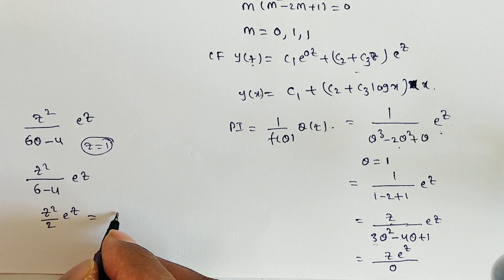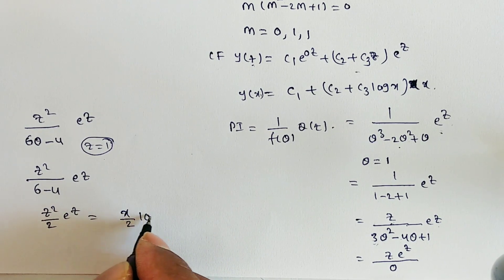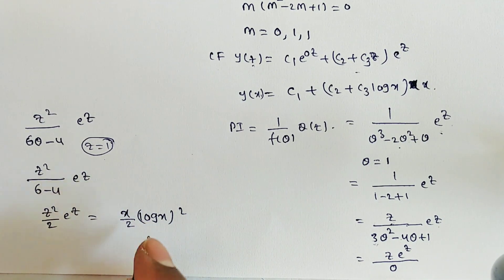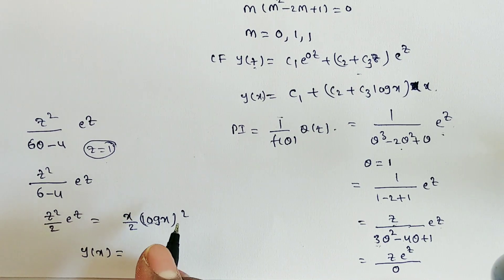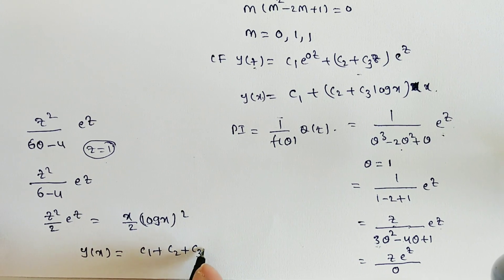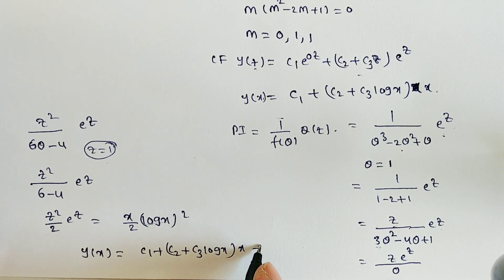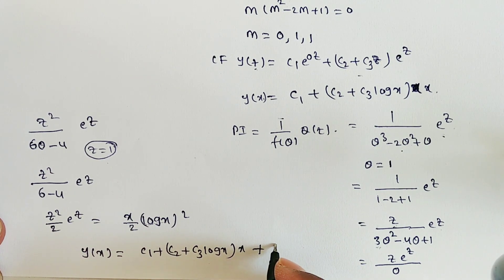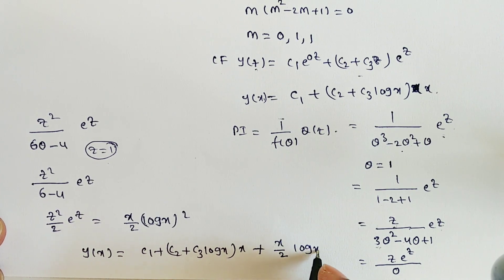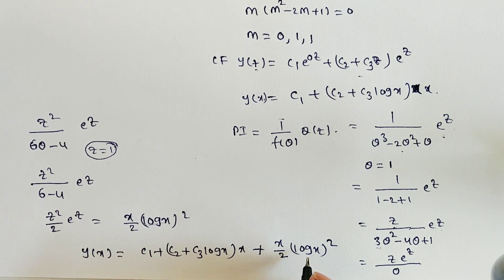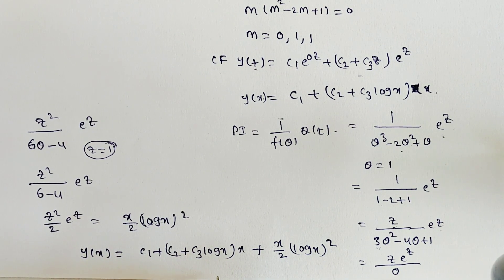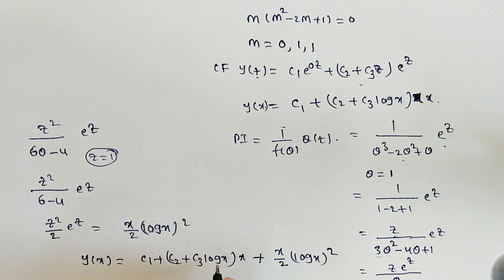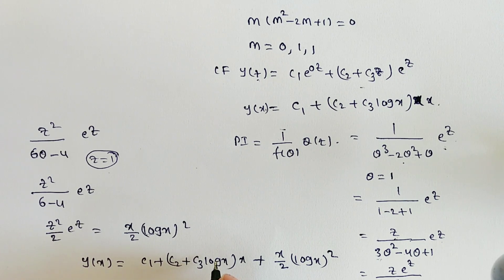Replacing z = log x and eᶻ = x, the particular integral becomes x · (log x)² / 2. Hence, the general solution is y(x) = c₁ + (c₂ + c₃ log x)·x + x(log x)²/2, where c₁, c₂, c₃ are arbitrary constants. This is the solution for the given homogeneous linear differential equation (Cauchy-Euler equation form). Thank you for watching.